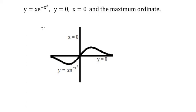Hello everybody. Today I will talk about calculus. The topic is about applications of integration and derivative. I will show you how to answer: we have y equals x times e to the power of negative x squared, where y equals zero, x equals zero, and we need to find the maximum ordinate.